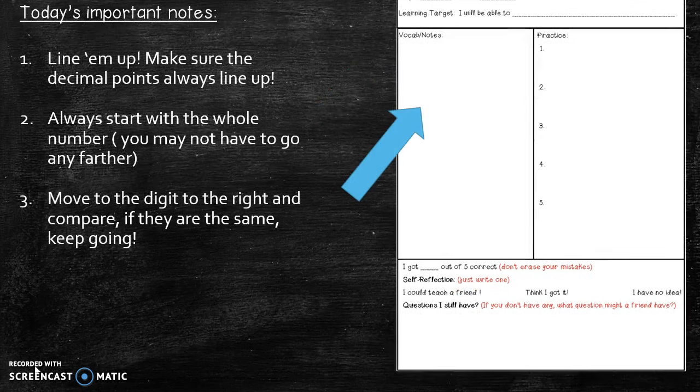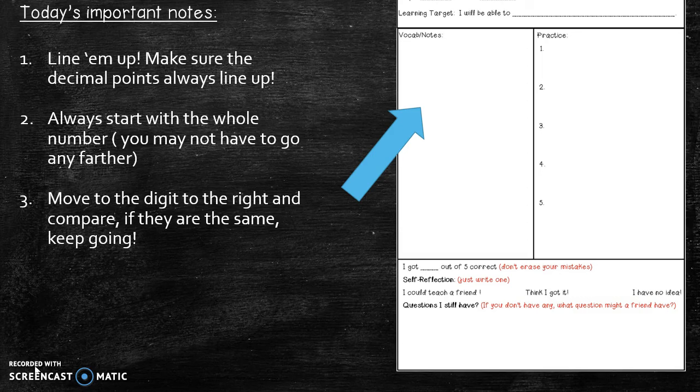So here are some important notes. You don't have any vocabulary words for this lesson, so I want to make sure that you put these three important steps in that left-hand column. Number one, line them up. Make sure the decimal point always lines up. Number two, always start with the whole number. You may not have to go any further. And number three, move to the digit to the right and compare. If they're the same, just keep going.